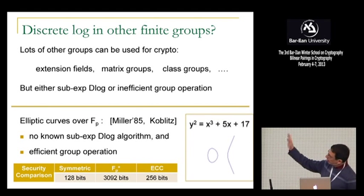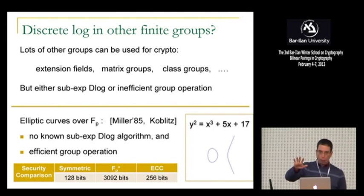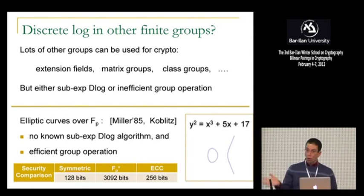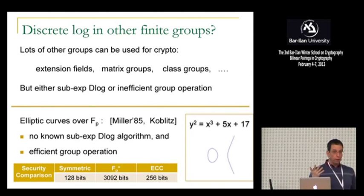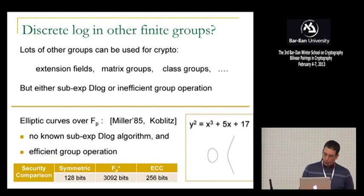So the question is what to do about that, and there have been many proposals over the years to kind of use different types of groups. Who says we have to use arithmetic modular primes? People have looked at discrete logs over extension fields, matrix groups, class groups of number fields, and so on. But in many of these examples, basically either the discrete log problem has a sub-exponential algorithm, or the group operation itself is very inefficient, so you end up with inefficient cryptosystems.